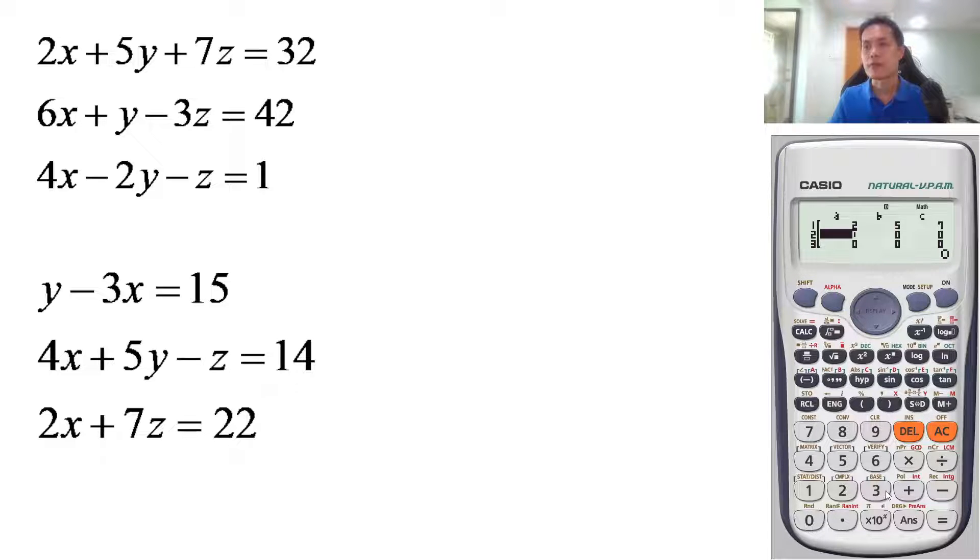Now next we move on to the second equation. You have six, so press equals. One y means one y, so you press one, you press equals, then you press minus three equals, and the last one is 42 equals.